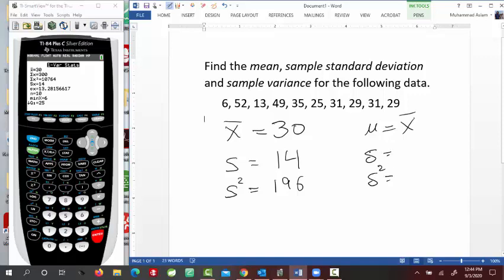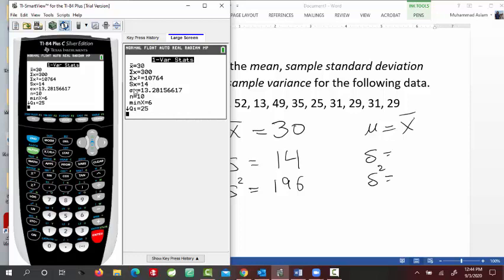So sigma, from this calculator, if I bring it here again, you see under S, this is sigma here. So if this data would happen from the population, then instead of S, we would be picking the sigma X. So this would be your standard deviation for the population, if your data is from population.